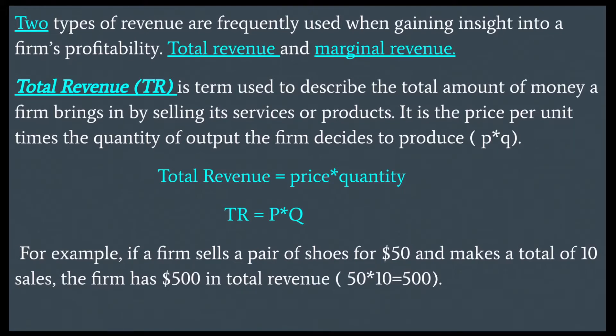For example, if a firm sells a pair of shoes for $150 and makes a total of 10 sales, the firm has $1,500 in total revenue. That is, $150 times 10 equals $1,500.